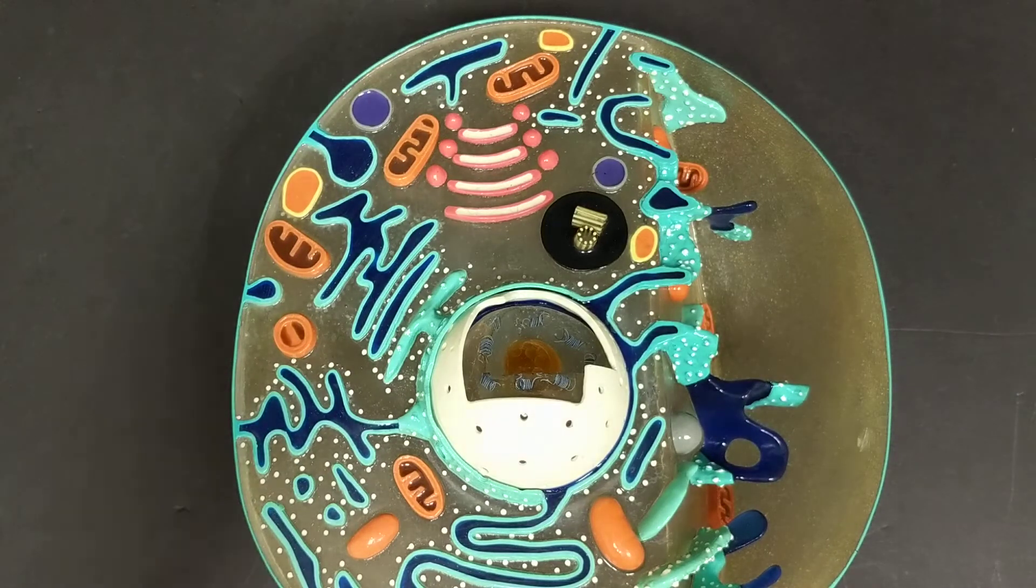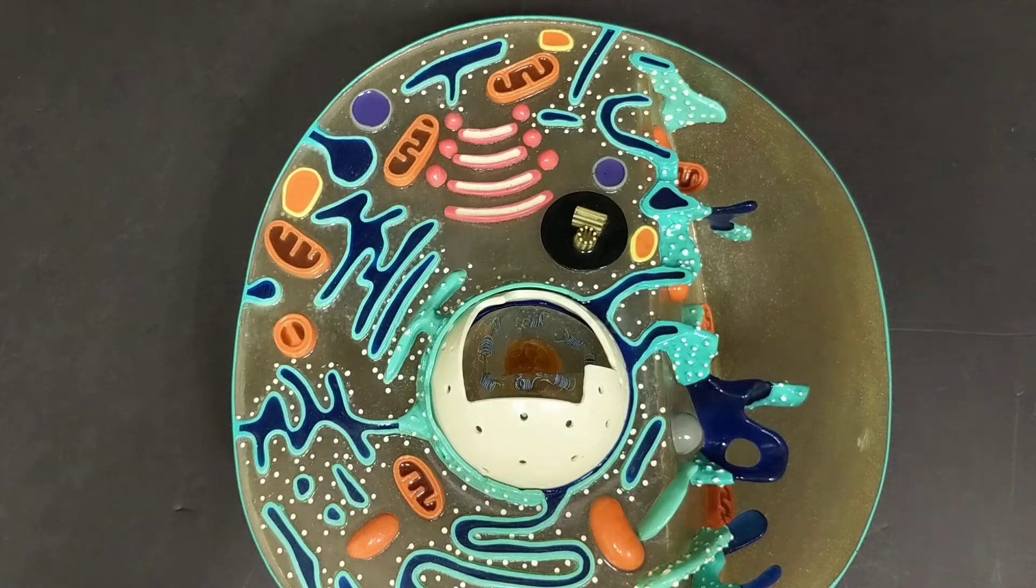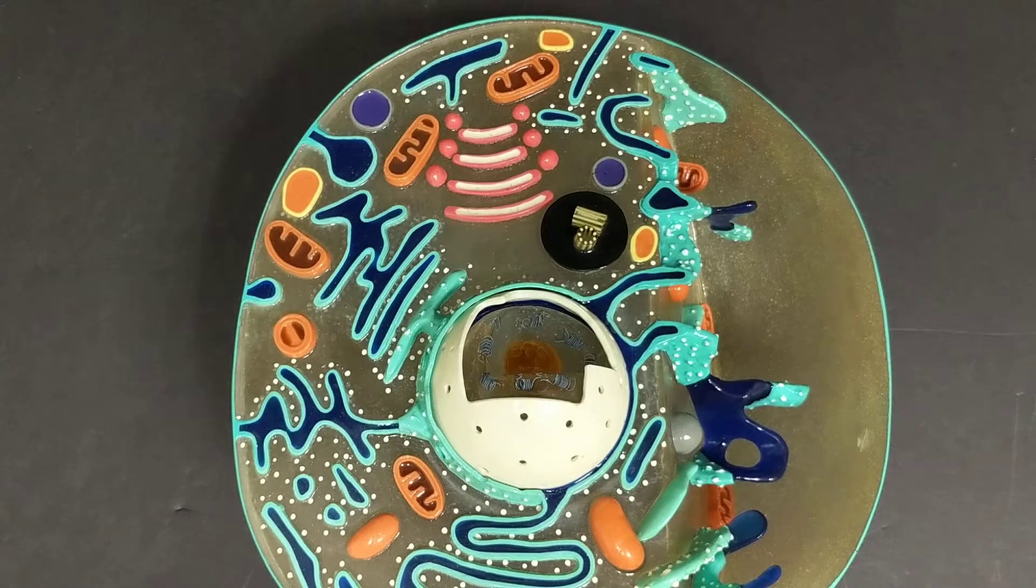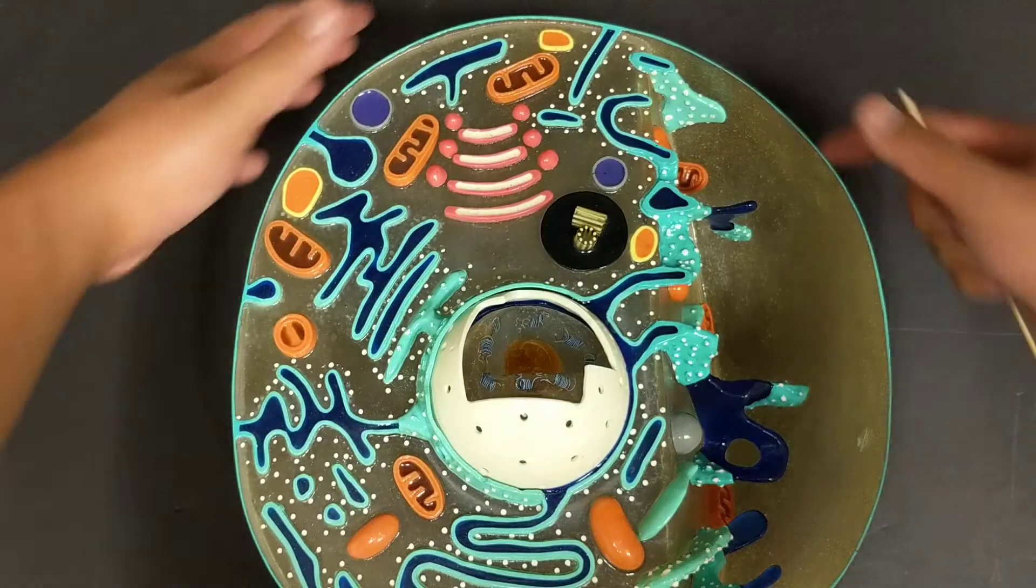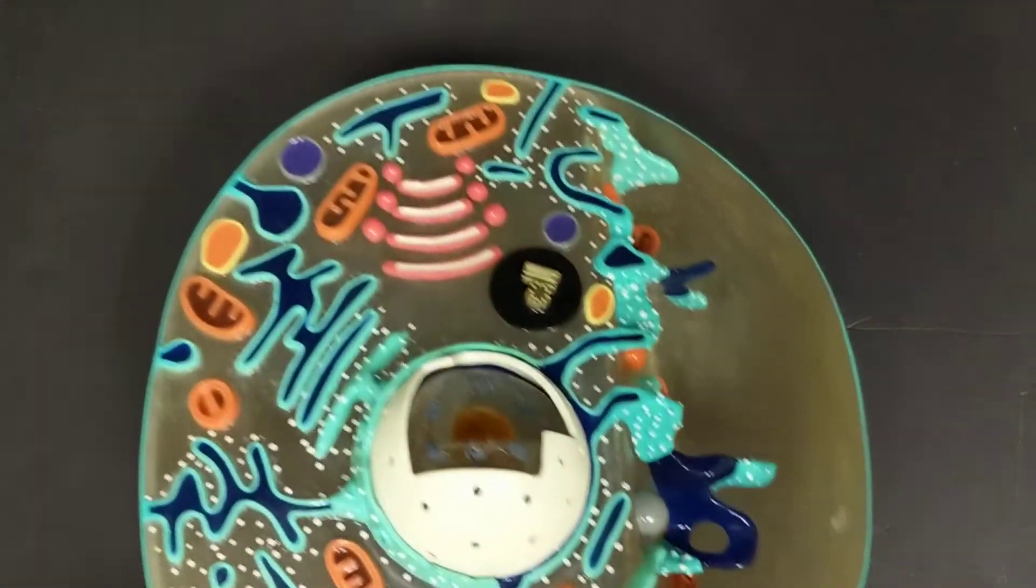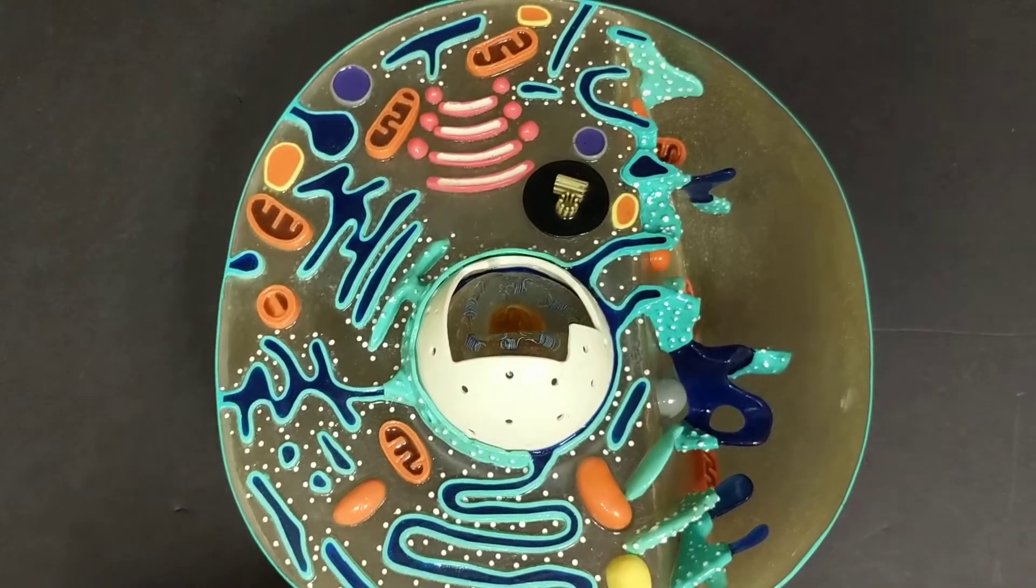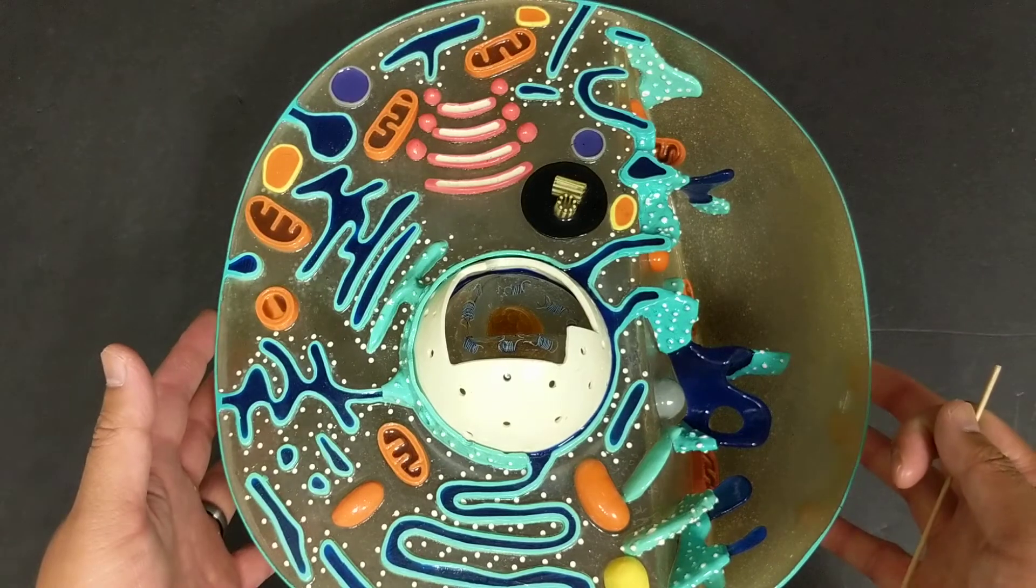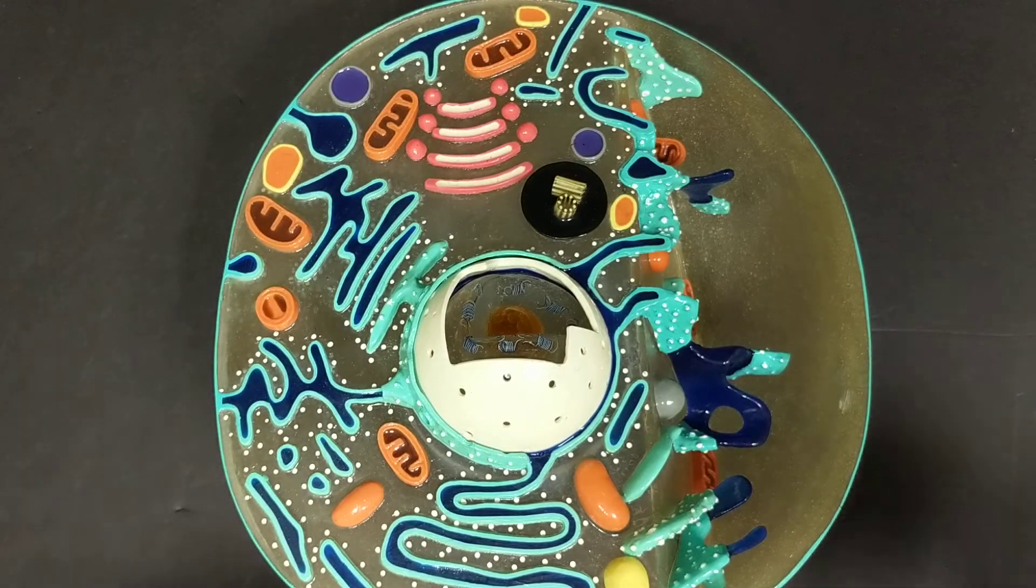At the very least, help figure out which is which, as well as help give you some determining factors on how to look for these organelles. So once again, plasma membrane on the outside. Notice that this cell is completely round. There are no extensions, no villi, cilia, or flagella. This is just plasma membrane on the outside.